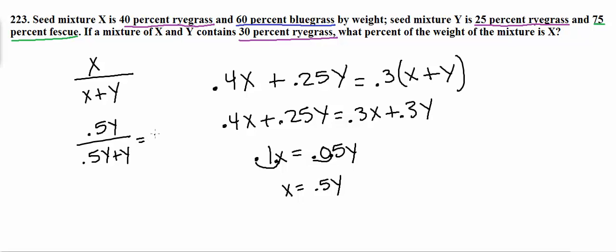This is going to equal 0.5Y over 1.5Y. Our Y's are going to cancel, and we are going to get 5 over 15 or 1 over 3, which is equal to 33%.